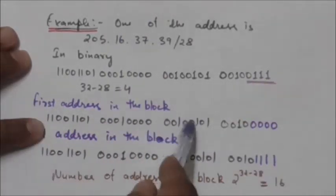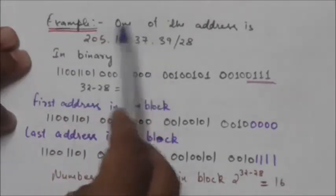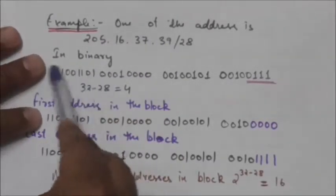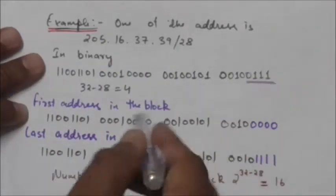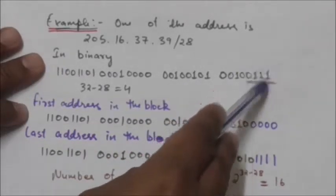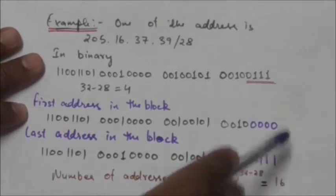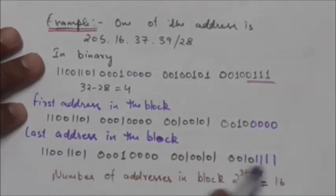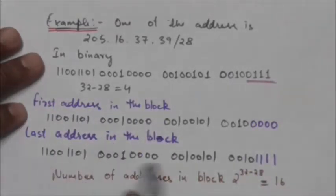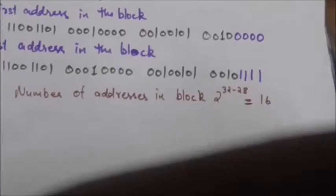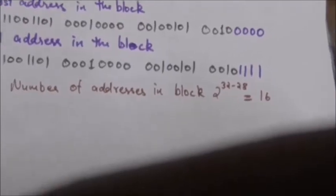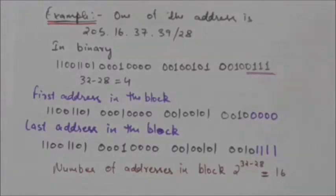When we set these four rightmost bits to zeros, we get the first address in the block. To find the last address in the block, we set the four rightmost bits to ones, giving us the last address. The number of addresses in this block is 2 raised to the power of 32 minus 28, which equals 16.